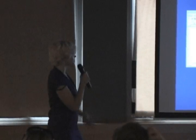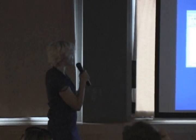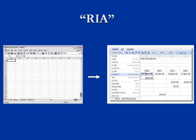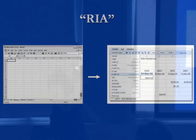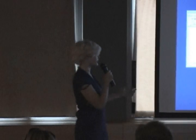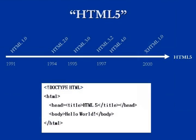Let's do some buzzwords first. RIA stands for Rich Internet Application — basically a web application that has all the functionality you expect in a desktop app. One example is Google Spreadsheets. RIAs are kind of a hack right now, but they're getting less hacky with technologies coming forward, like HTML5.